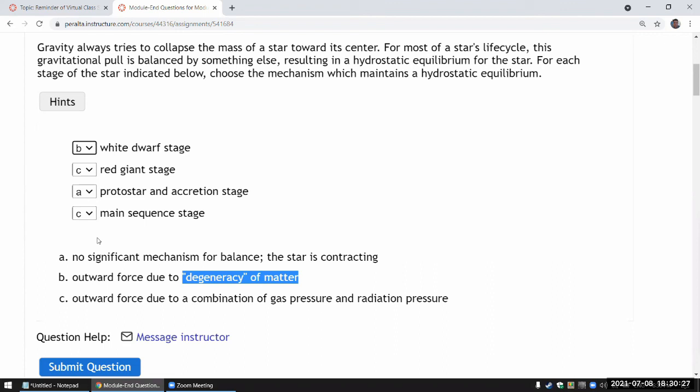And for stars that are heavier than our sun, it might end up as a neutron star. That's where degeneracy of the neutrons, electrons having been forced into protons, so that the whole thing is made out of neutrons.